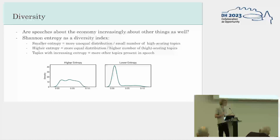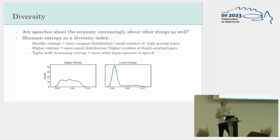The second metric I use is looking at the diversity of topic distributions within a speech. I ask: are speeches about economic topics or the economy increasingly about other things as well? So I take the speeches where economic topics are ranked first, and then see what the spread of other topics is in there. I use entropy as a diversity index here. Small entropy indicates a small number of high-scoring topics — so the speech is only about that one topic.